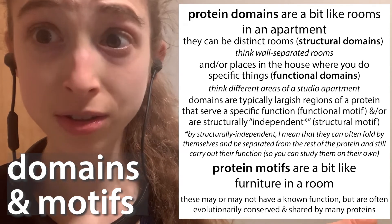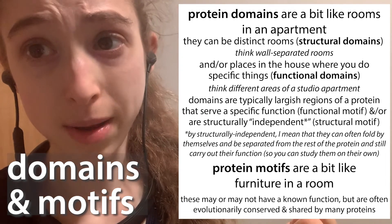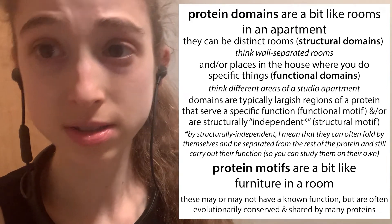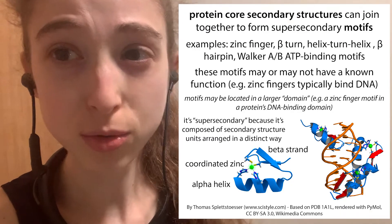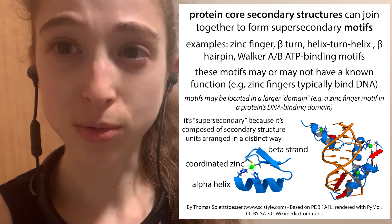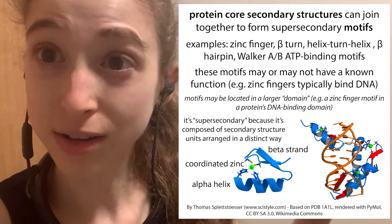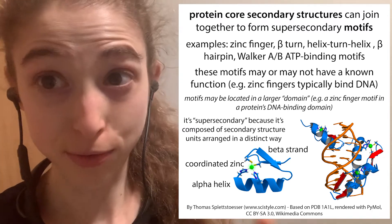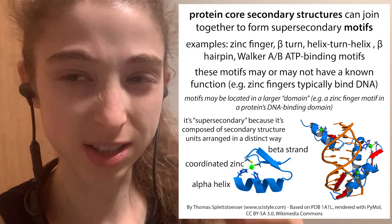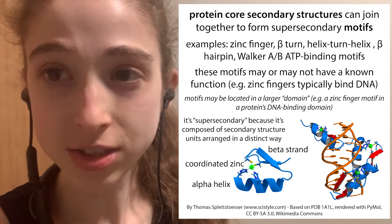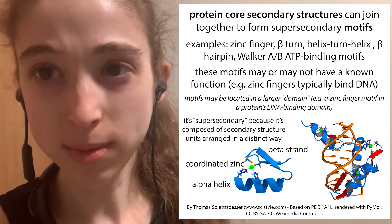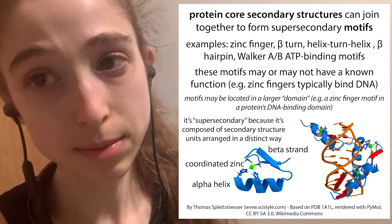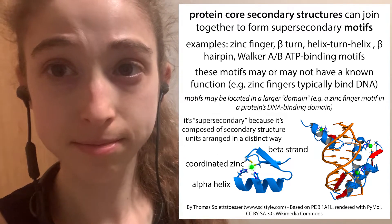Let's talk about the different terms we can use to describe different parts of a protein — what those parts do and what they look like. With domains, you can think of them kind of like rooms in your apartment, and with motifs it's more like furniture in those individual rooms. There's a lot of wiggle room between these terms. You have structural domains, functional domains, and motifs.